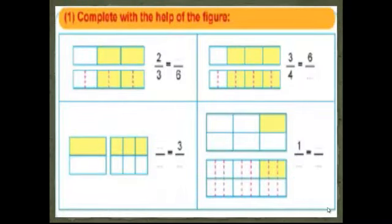Open pupils book page 49, exercise number 1. First: 2 over 3 equals space over 6. 3 becomes 6, so it becomes bigger. 3 times 2 equals 6, so multiply by 2 down and multiply by 2 up: 2 times 2 equals 4. Second: 3 over 4 equals 6 over space. 3 becomes 6, so multiply by 2. Times 2 up: 4 times 2 down, 4 times 2 equals 8.